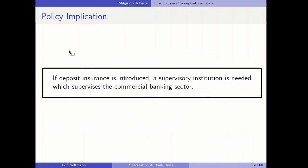The policy implications are very important. If a deposit insurance is introduced by a government, the government also needs to introduce a second institution: a supervisory institution to supervise the commercial banking sector. The deposit insurance must be accompanied by a supervisory body because informed depositors no longer have an incentive to read bank balance sheets. Without monitoring, banks will opt for the insecure investment alternative, which is negative for society. It is therefore critical that when a lender of the last resort is introduced, banking supervision is also introduced.